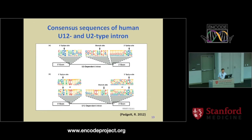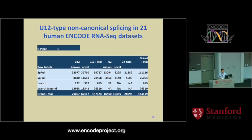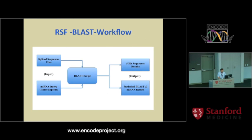U2 and U12 introns have different splicing signatures — U2 uses GT-AG, while U12 also has AT-AC in addition to GT-AG cases — and their branch point sequences also differ. We applied our new algorithm to the ENCODE dataset and compared the prevalence between U12 and U2 types. Interestingly, we found lots of U12 signatures occurring in novel splice sequences, meaning those do not follow the traditional canonical splicing pattern, suggesting interesting biological signatures in the ENCODE dataset.